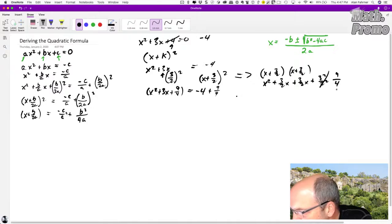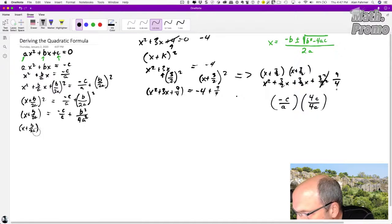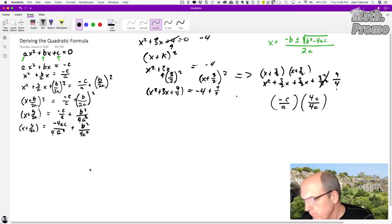Then the common denominator, if one part has A, the other part has 4A, the common denominator is going to be 4A squared. You want to take negative C over A and multiply by 4A over 4A. So what you end up doing is having X plus B over 2A squared equals negative 4AC over 4A squared plus B squared over 4A squared.